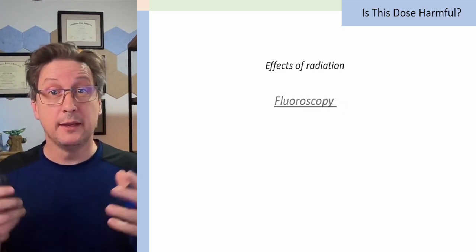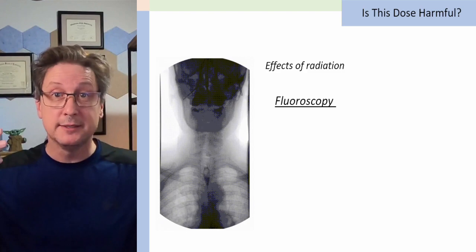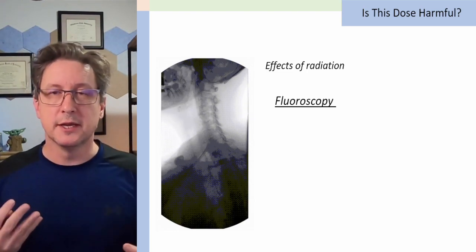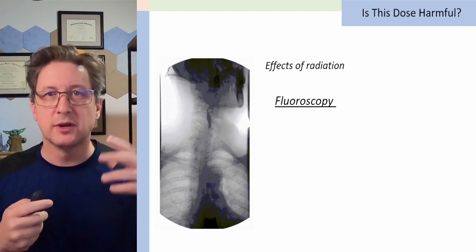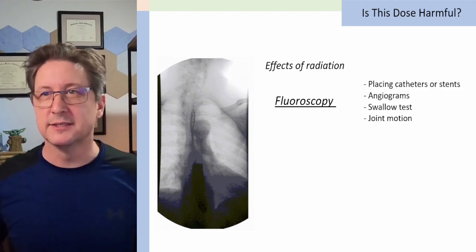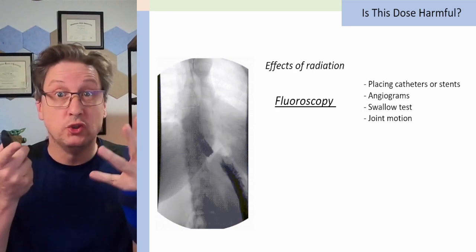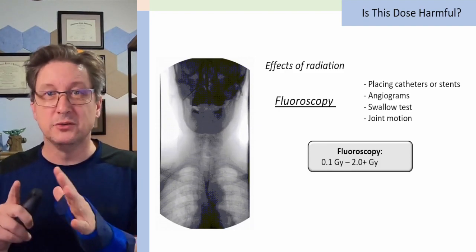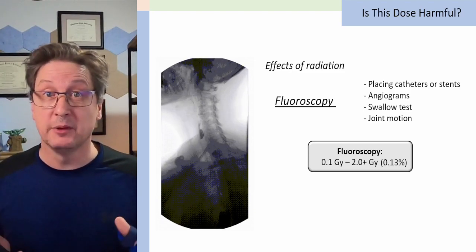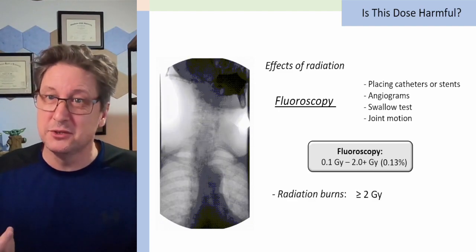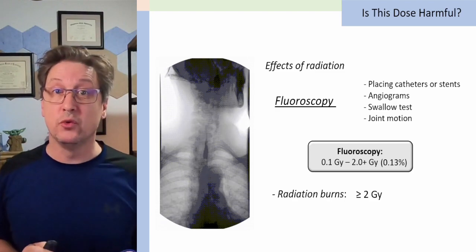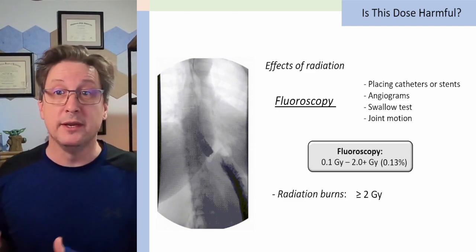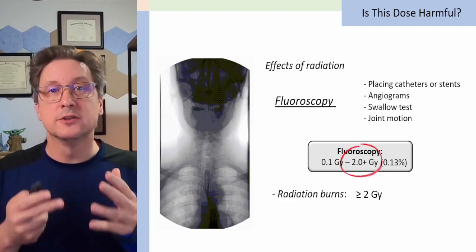However, there is an imaging modality called fluoroscopy. And this is basically taking an x-ray movie. So instead of just getting a single x-ray image, they leave the beam on and they get a movie of what's going on inside your body. So here you see someone swallowing some barium contrast and you can see that move as it goes down their esophagus. And these are used for things like placing catheters or swallow tests or assessing joint motion. So for fluoroscopy, typically we're talking about doses of about 0.1 gray up to even as high as 2 gray for really long fluoroscopic procedures. And these are a small number of procedures that get that high, but some do. So now remember our threshold for radiation burns was 2 gray. So there is a chance with fluoroscopy, if it's a very long procedure, that you might see some reddening of your skin. Now, after the procedure, that reddening should go away. But we are up at that 2 gray level, so it's possible that it might happen.